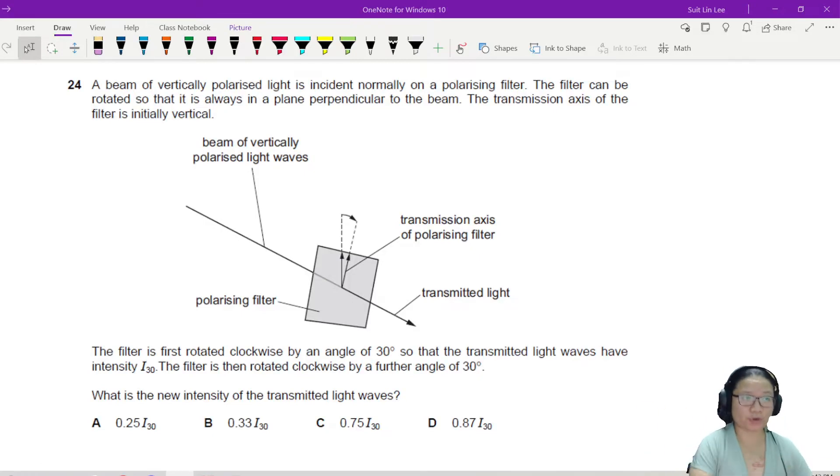This is a polaroid question. So we have a beam of vertically polarized light incident normally on a polarizing filter. This filter can be rotated so that it is always in a plane perpendicular to the beam.